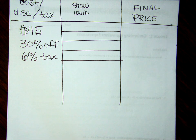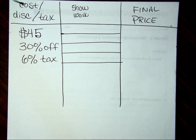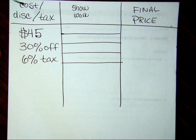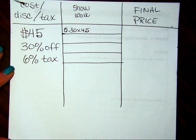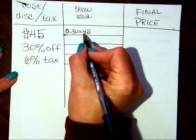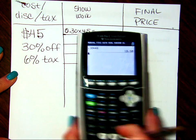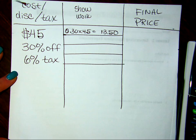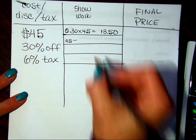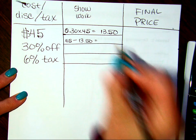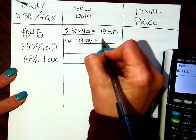So the first thing I need to do is find what 30% of $45 is. In your little column in the middle, write: 30% of $45 is what? Hopefully you typed that in and got $13.50. So the amount that you are saving is $13.50. What do you do to get your new price? You take what it used to cost and subtract what you are saving, and that gives you your new price. My new price is $31.50.